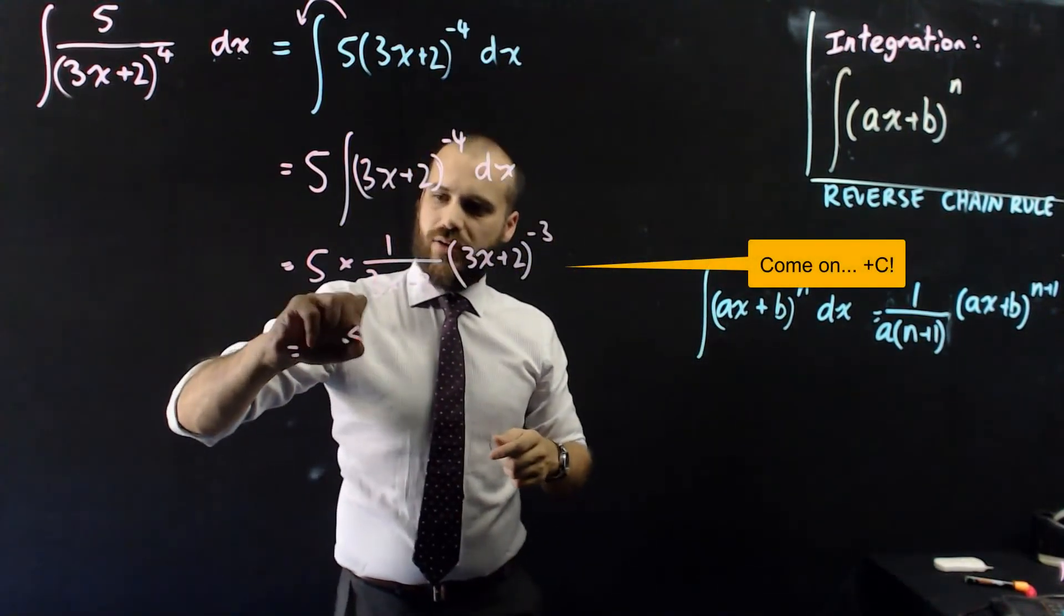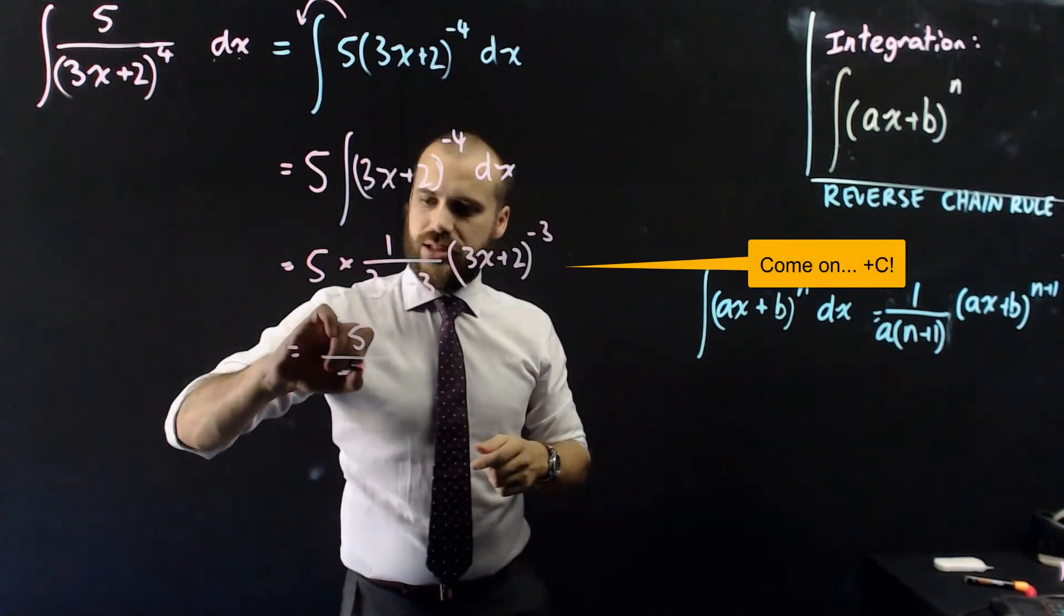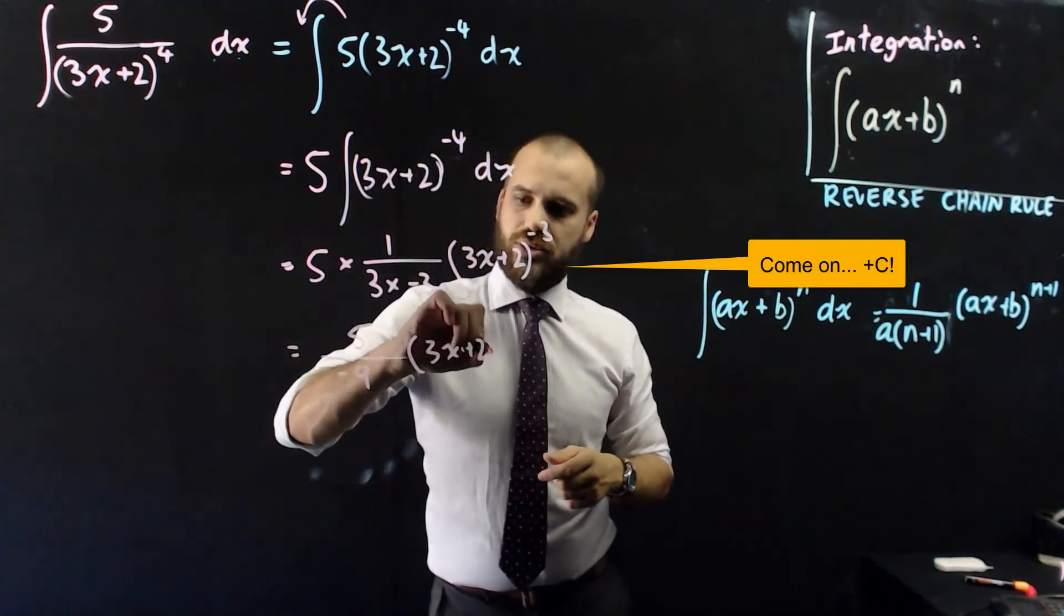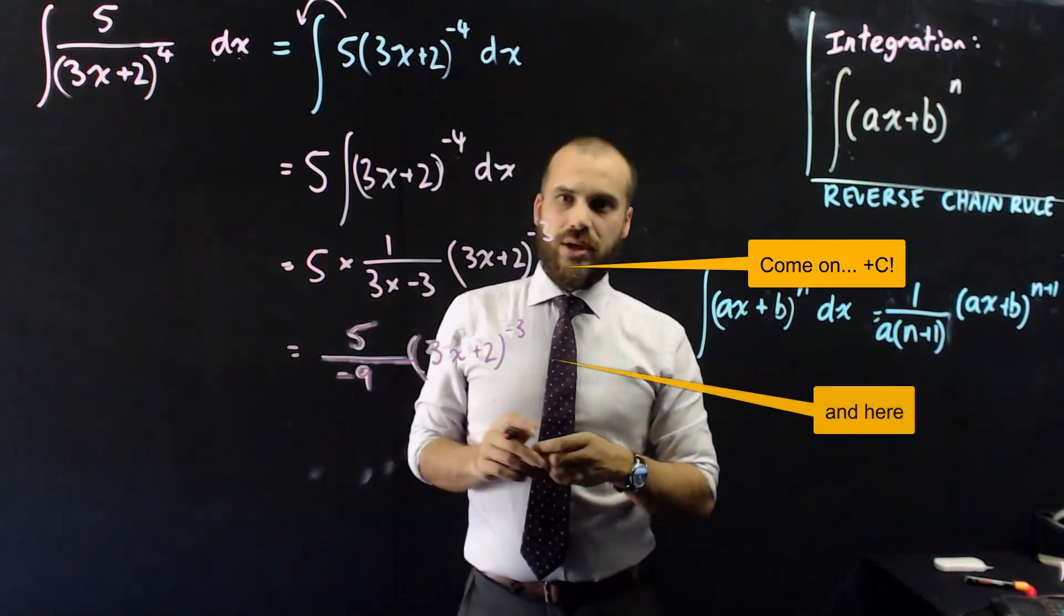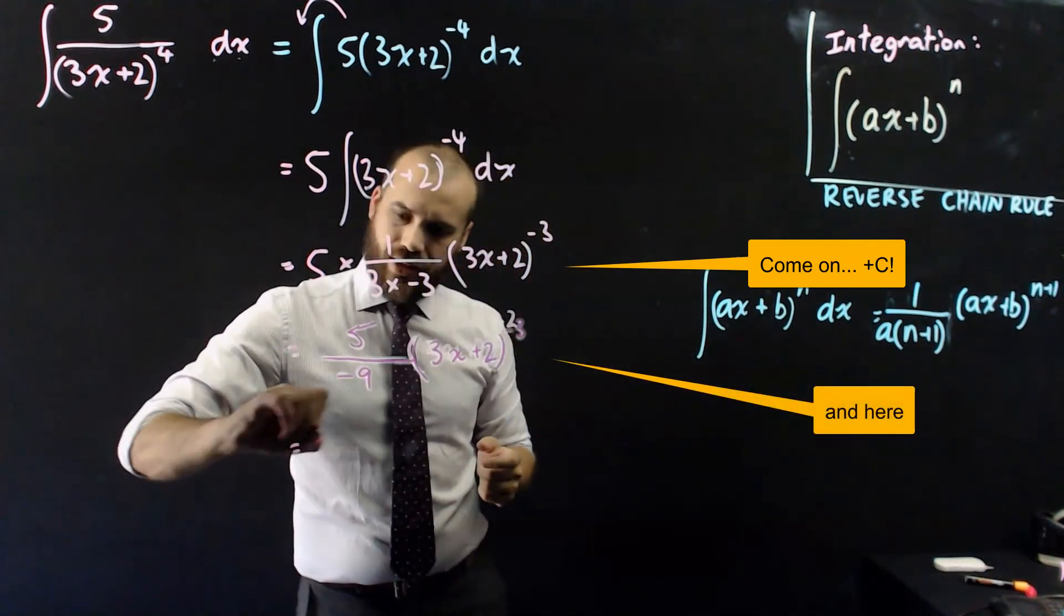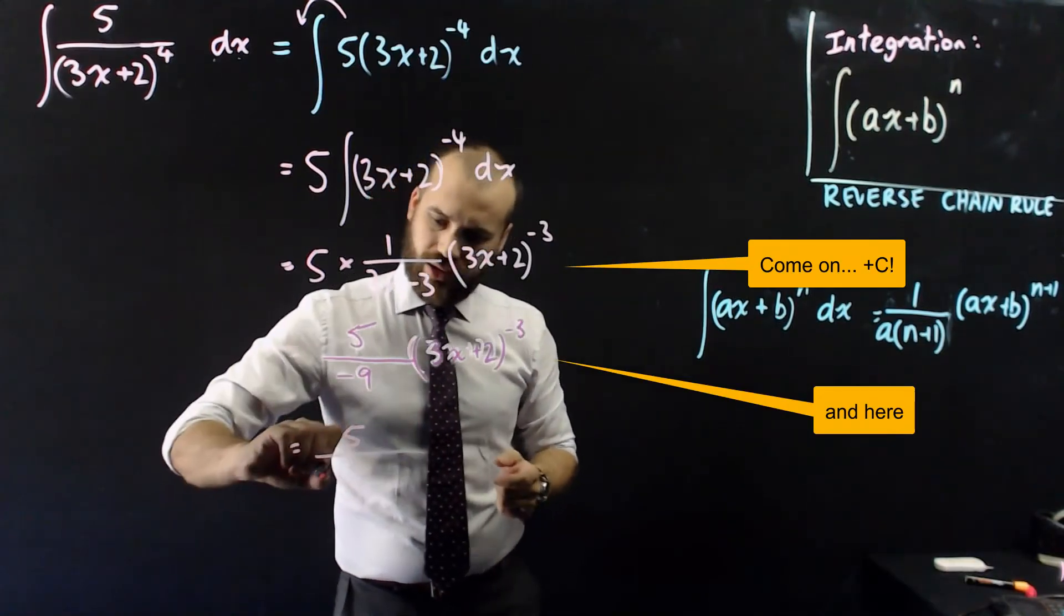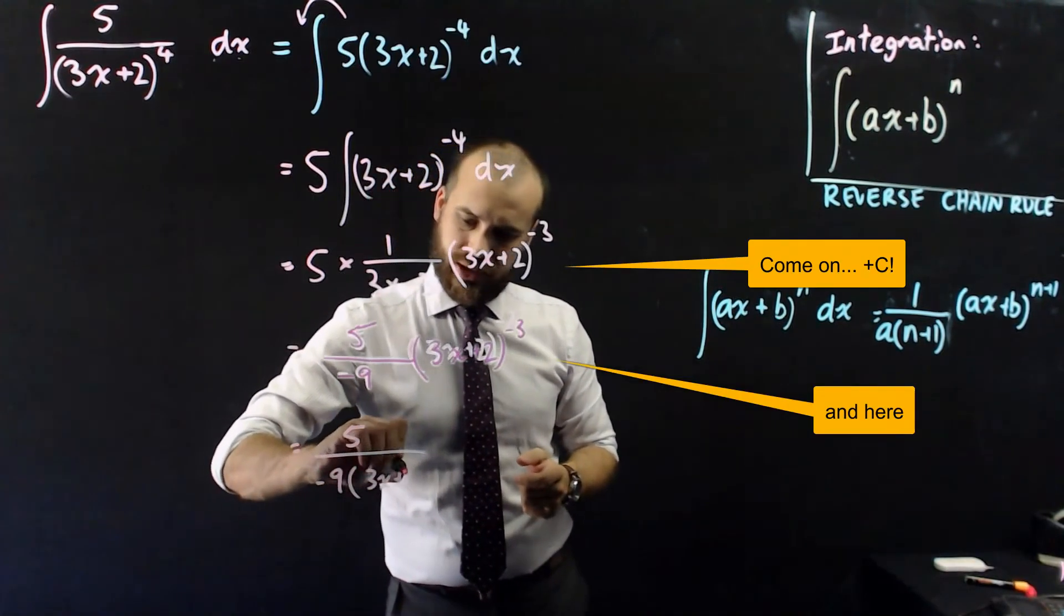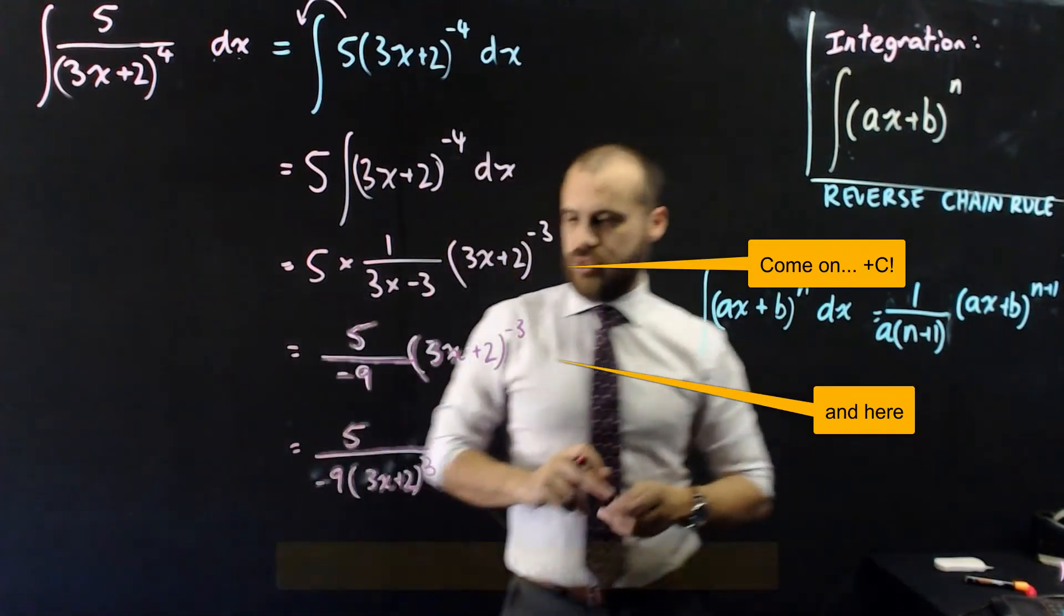That's going to be 5 over negative 9 bracket 3x plus 2 to the negative 2. And if I want to write it in a different way without a negative power, 5 over negative 9 bracket 3x plus 2 squared.